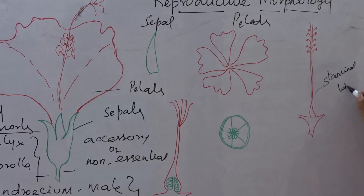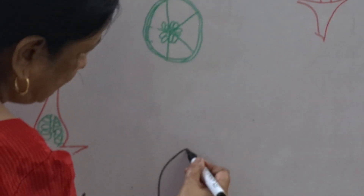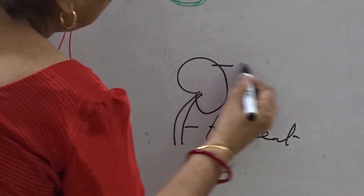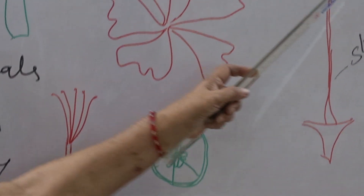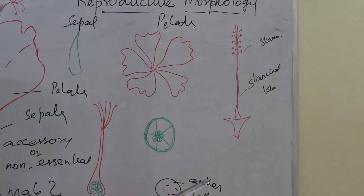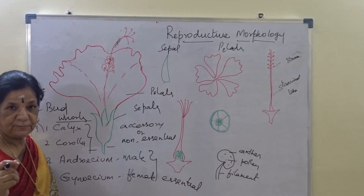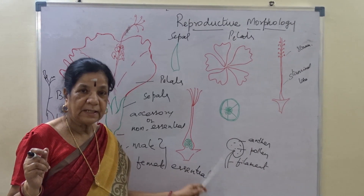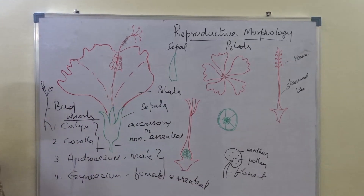Now this staminal column has stamens. Each stamen has a structure called the filament, which is the stalk of the stamen, and the head portion called the anther — also called the anther lobe — which contains the pollen. So androecium, the male part of the flower, is formed of numerous stamens. Each stamen has a stalk called the filament and the anther which contains the pollen grains — the male gamete. This is the structure of the androecium.